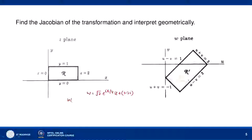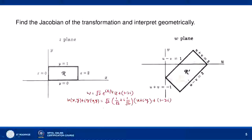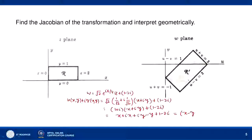We have w = u(x,y) + iv(x,y) and z = x + iy. So √2·e^(iπ/4) = √2·(cos(π/4) + i·sin(π/4)) = √2·(1/√2 + i/√2) = 1 + i. Multiplying: (1 + i)(x + iy + 1 - 2i) gives x + ix + iy + i²y + 1 - 2i, which simplifies. Collecting real and imaginary parts: (x - y + 1) + i(x + y - 2).